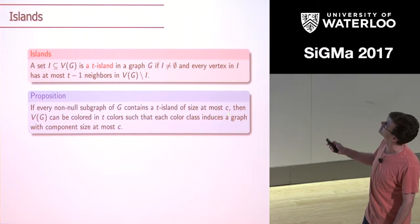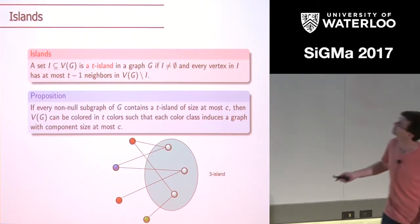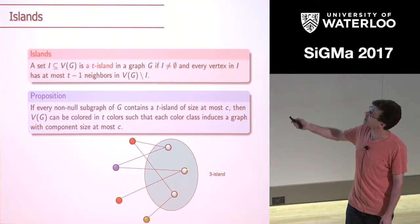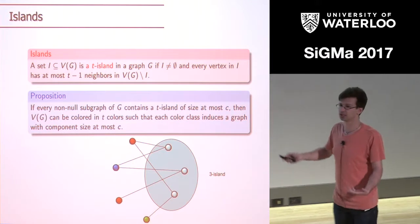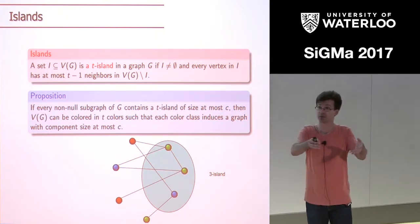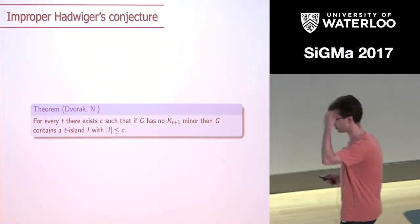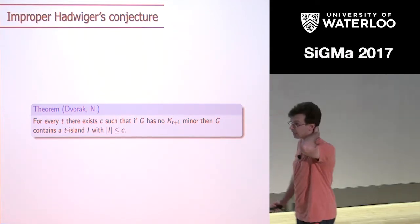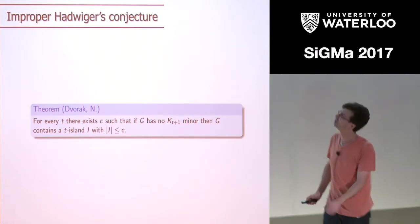The proposition: suppose every non-null subgraph contains a t-island of bounded size. Then I can color as I want. Here's the proof: delete the island, color using t colors by induction, then look at the island and color it so that nobody within the island has a neighbor of the same color outside the island. Within the island there could be a mess, but no monochromatic component will leak from my island because I color things appropriately. To prove this coloring with monochromatic components, I just need to show that if you have no Kt+1 minor you can always find a t-island of constant size.